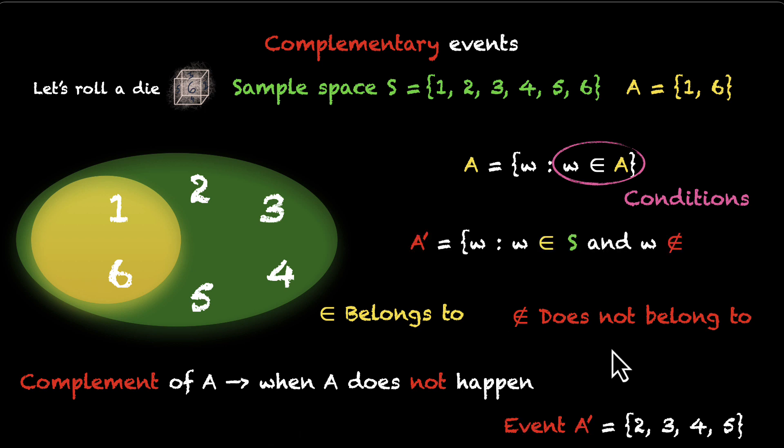So, we can write A dash as this. Now, it looks messy, but let's break this down. All this means is the list of outcomes W, the set of outcomes W, where W belongs to S, which means it's part of the green region, and W does not belong to A, which means it's outside the yellow region. So, everything which is inside green and outside yellow will be the complement of A. That's all what this messy thing is saying. So, that's how you write A dash. You'll see these notations written in your textbooks, and you might want to learn how to write them just to look fancy.